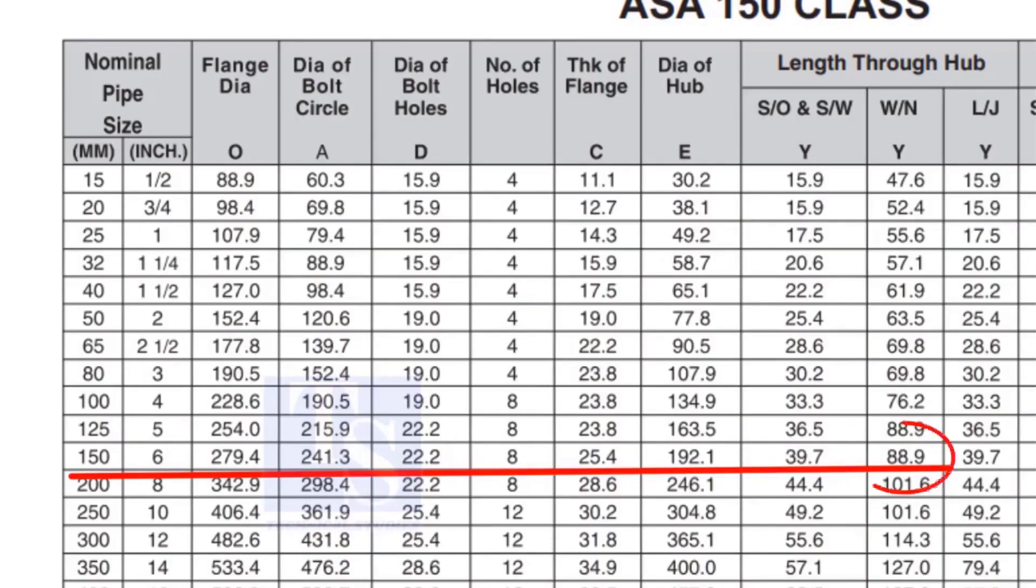Check the height of the flange in the table. Since the pressure rating is 150, the height of the flange is 88.9mm. Note down the height.